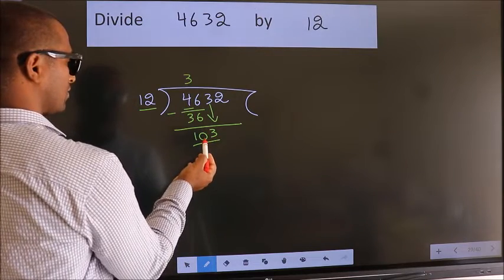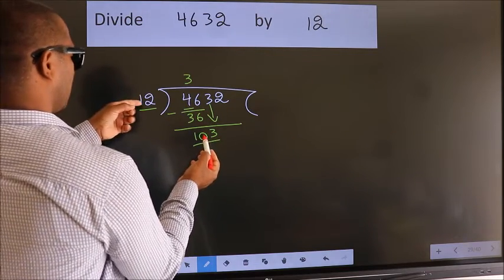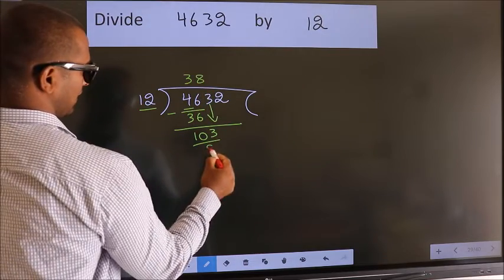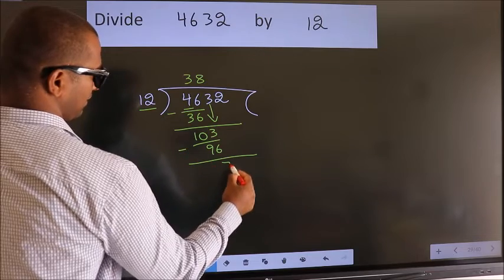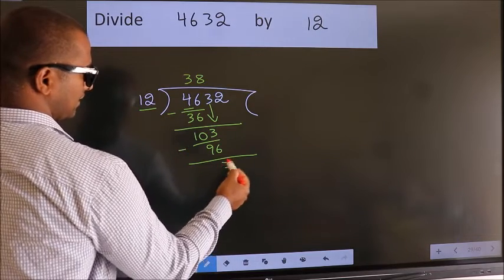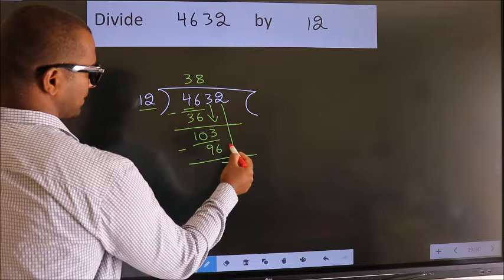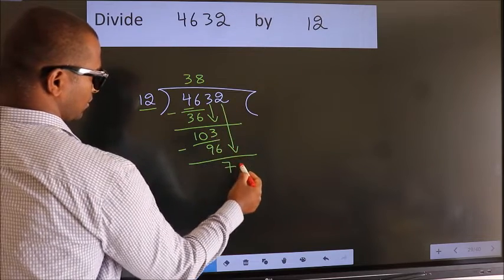A number close to 103 in the 12 table is 12 eights, 96. Now we subtract. We get 7. After this, bring down the beside number. So, 2 down.